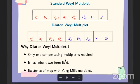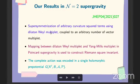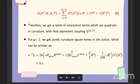Other than that, the reason we chose to work with dilaton Weyl multiplet is the existence of map between Weyl multiplet and dilaton Weyl multiplet in Poincare theory. So in this work, we reported the construction of arbitrary curvature squared action coupled to arbitrary number of vector multiplet using dilaton Weyl multiplet. We found a map between dilaton Weyl multiplet and Weyl multiplet in Poincare theory and we use this map to construct the Riemann square invariant action. The complete action was encoded in a single holomorphic prepotential G where this X is a complex scalar of vector multiplet. This B, A and C are composite fields constructed out of different fields of matter multiplet.